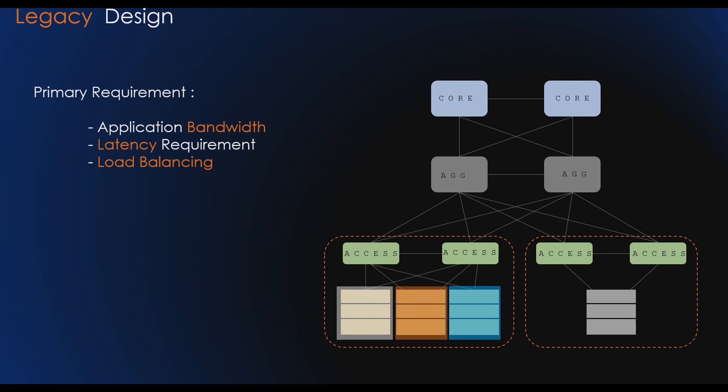It is common to see the majority of traffic entering and leaving the data center, which we refer to as north-south traffic. Traditionally, three-tier architecture was sufficient to accommodate such flows, even with a high oversubscription ratio between the layers of the network.